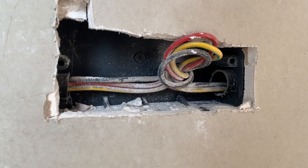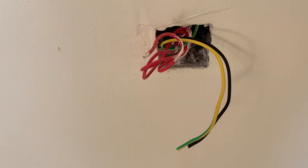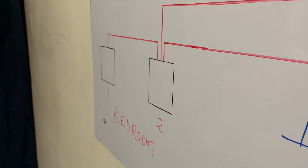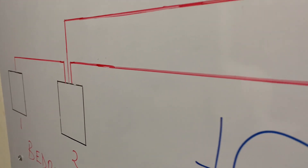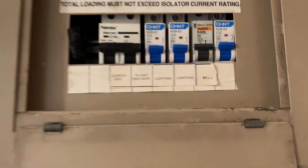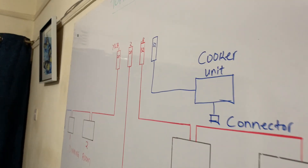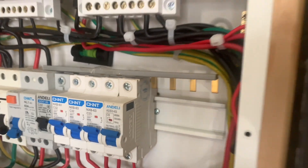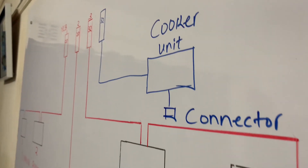Welcome to today's video where I'm talking about the distribution of power from the consumer unit all the way to the various power outlets or sockets in house wiring. Take for instance a two-bedroomed house — it could have several sockets, and these sockets can be connected in a loop, or what is simply referred to as a ring circuit. I'll be sharing how that is achieved as well as the number of MCBs we can have in such a setup.